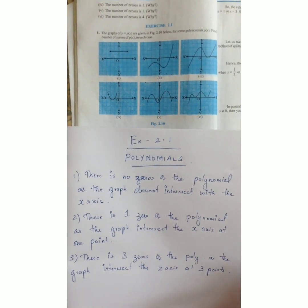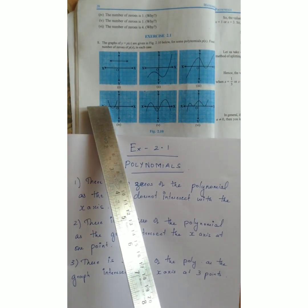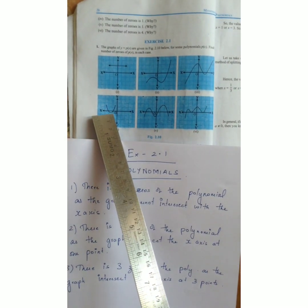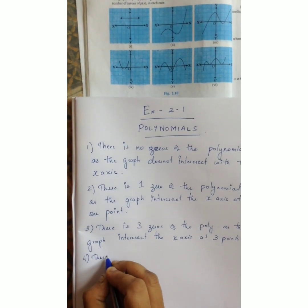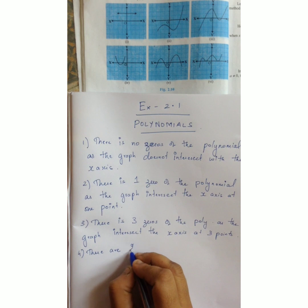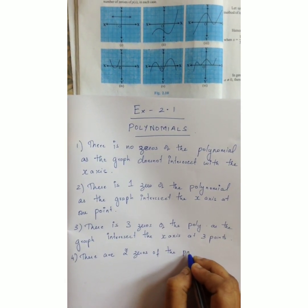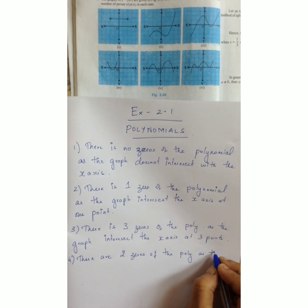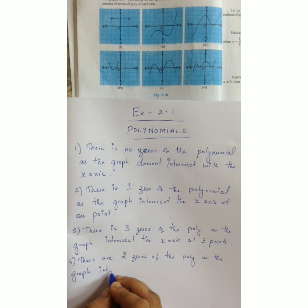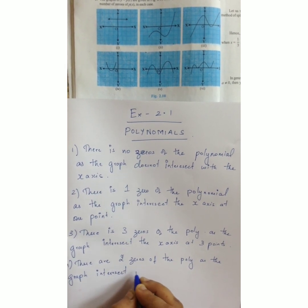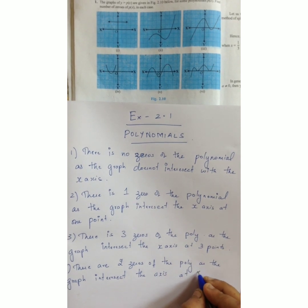In the fourth sum, the graph intersects the x-axis at one, two. So there are two zeros of the polynomial, as the graph intersects the x-axis at two points.